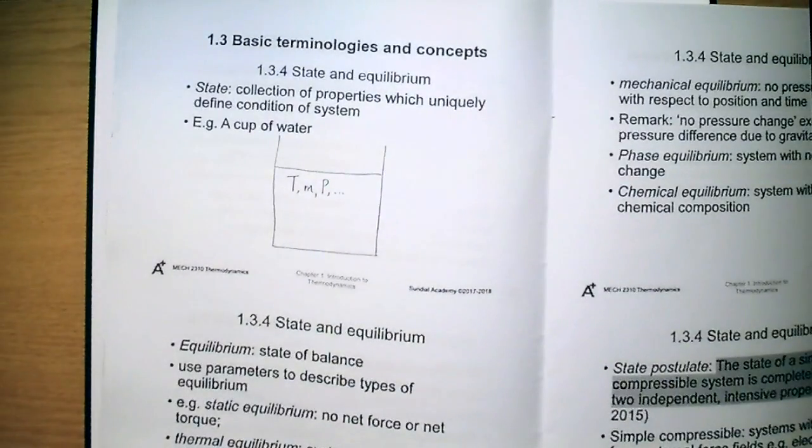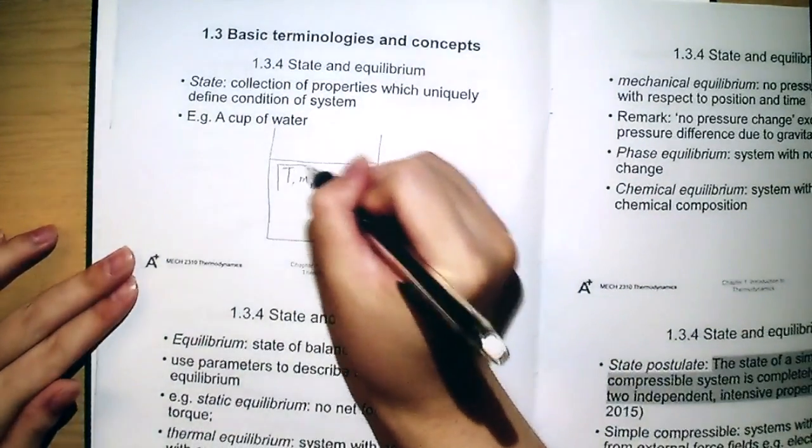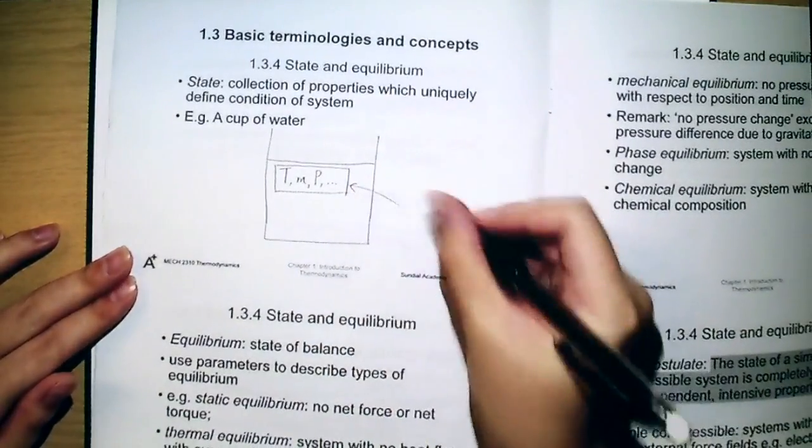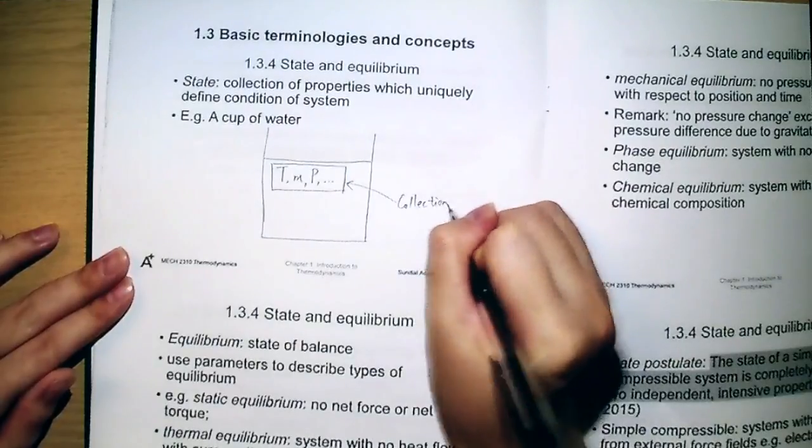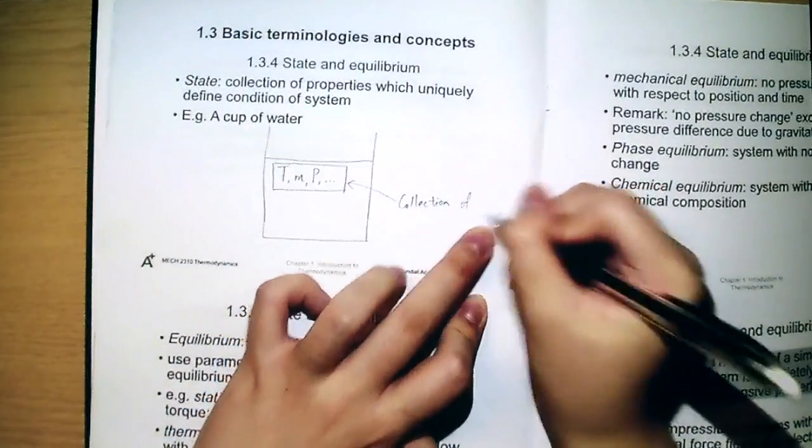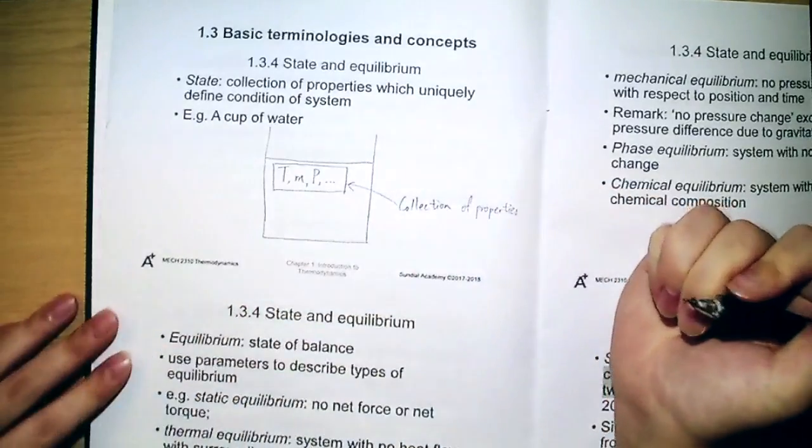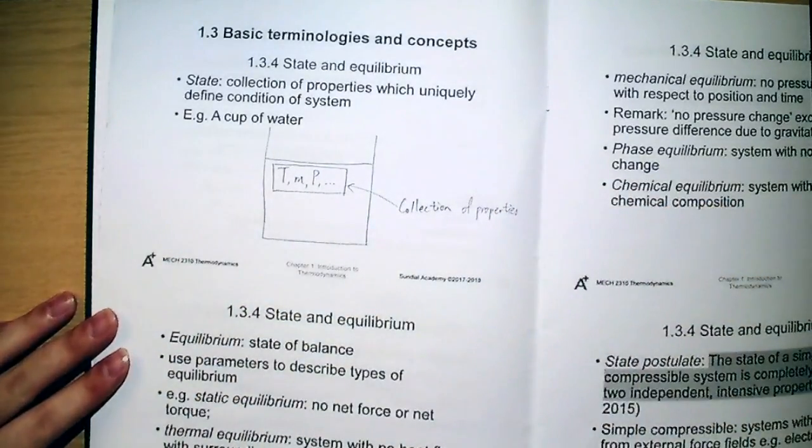Well, here, we say that this group of things would be a collection of properties. We would give a name to that. That would be state.